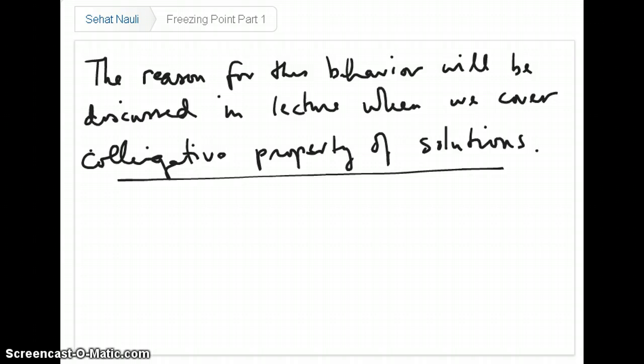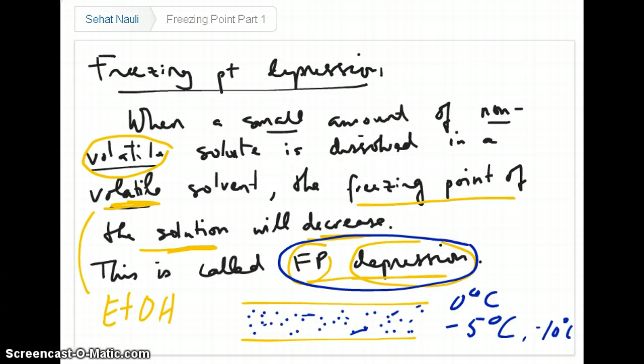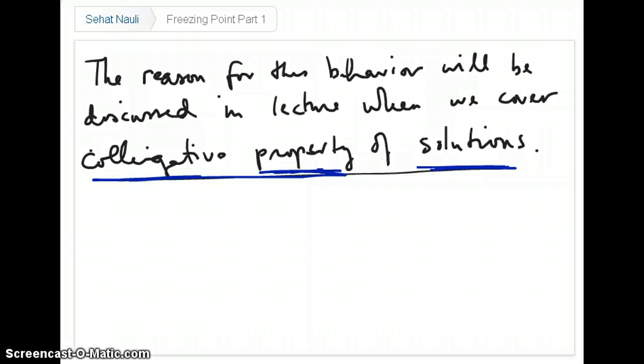But all of these properties that we will discuss in class, including freezing point depression, will be referred to as the colligative property of solutions. So these are properties that occur in solutions when you take a small amount of non-volatile solute and you mix it with a volatile solvent. We'll have other properties which are vapor pressure changes and boiling point increase. All of these will be also examples of colligative properties that we'll talk about in class.